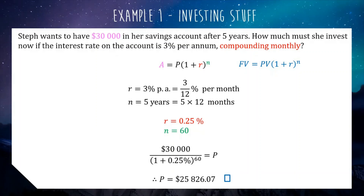A few tricks to be aware of here: first of all, the compound period — you need to be reading the question carefully and making sure you're doing the right calculations. Also, just double-check whether you're finding an A or a P based on the question. You have to read.